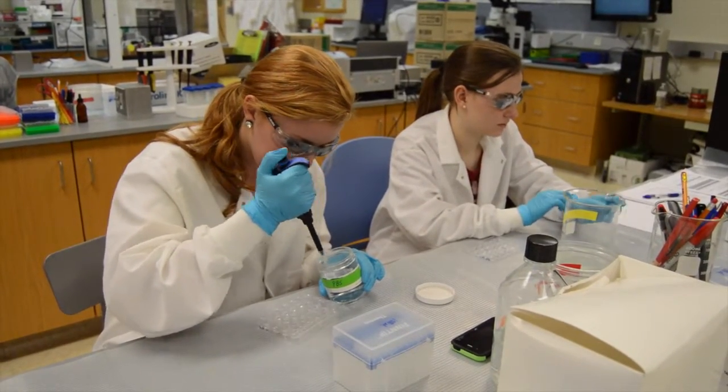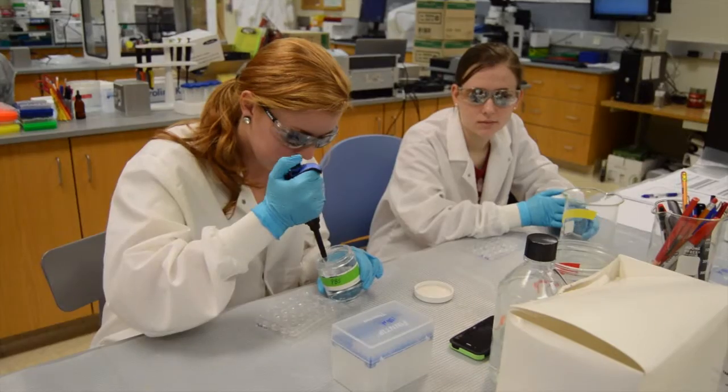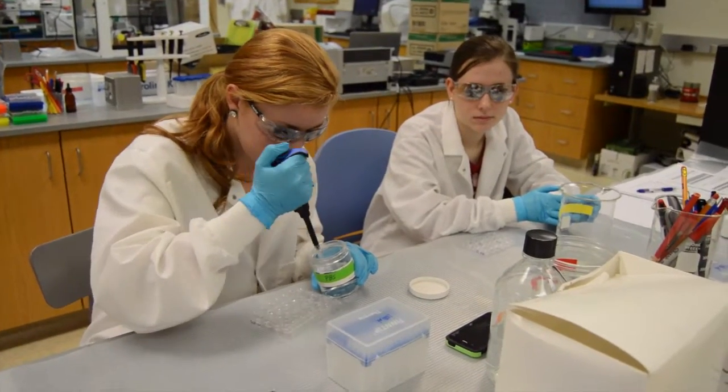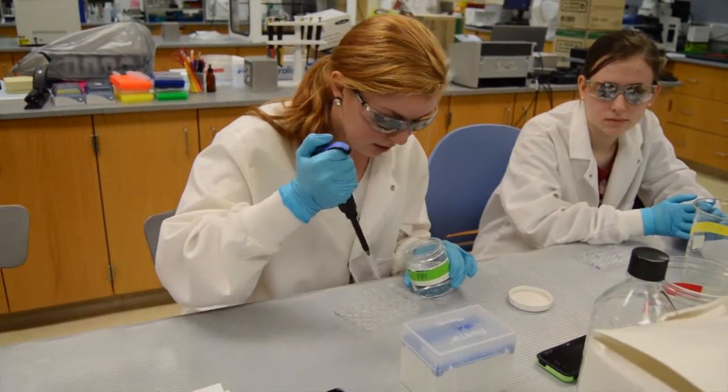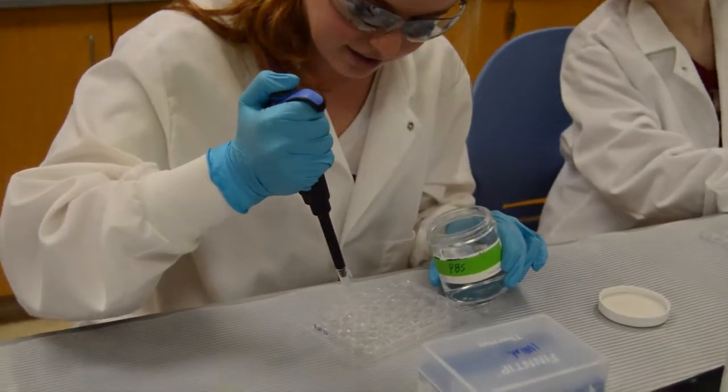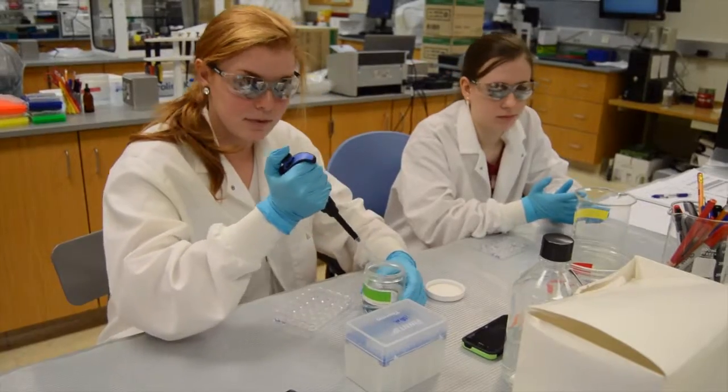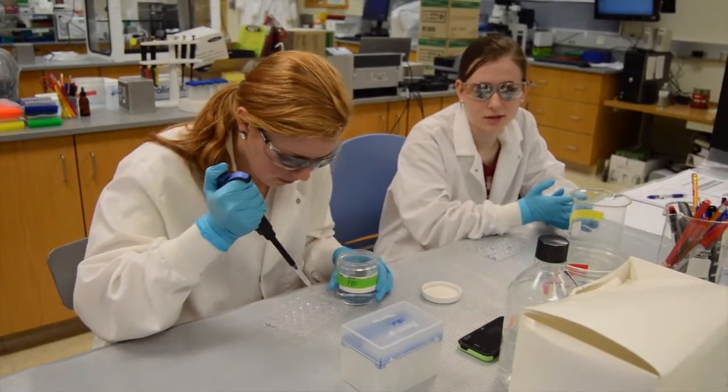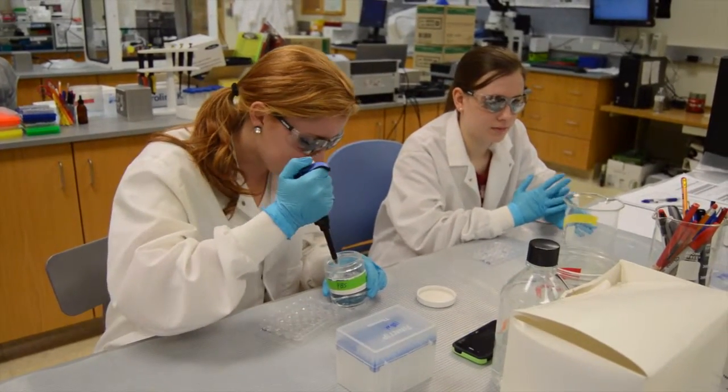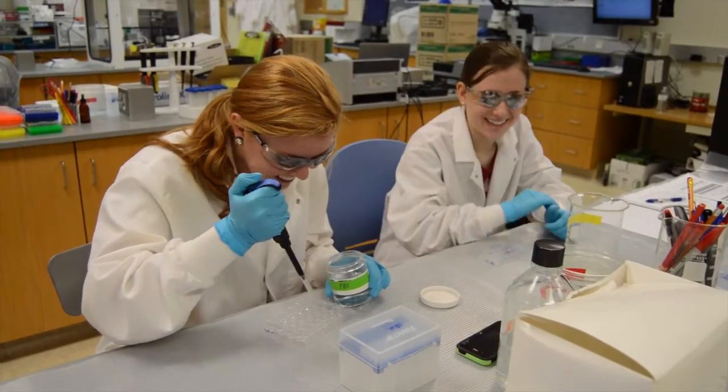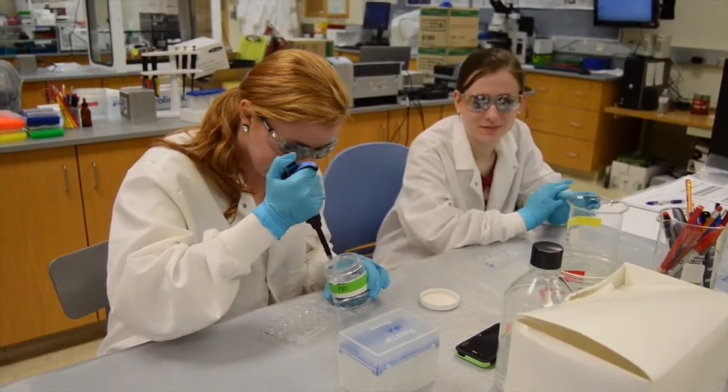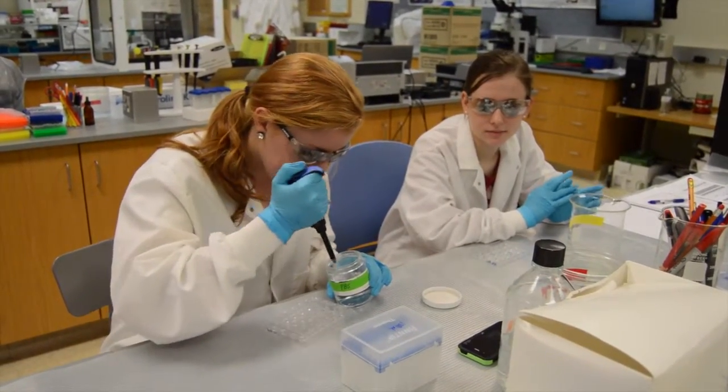Next, add the primary antibody to each well and store in the fridge overnight. On day two, wash the sections again with PBS to remove unbound primary antibody. After washing, secondary antibody is added for ten minutes. After ten minutes, again wash three times in PBS for five minutes. Then add avidin biotin complex, ABC, to tag the secondary antibody.